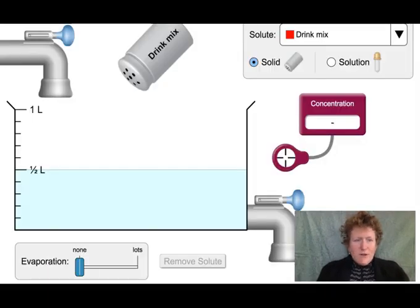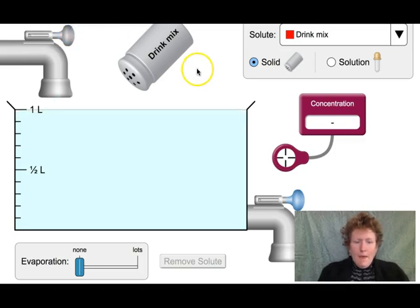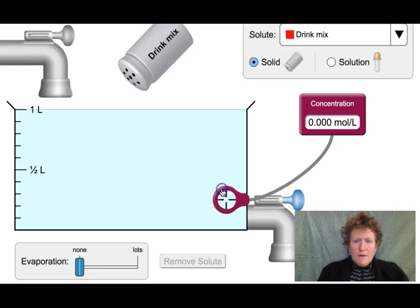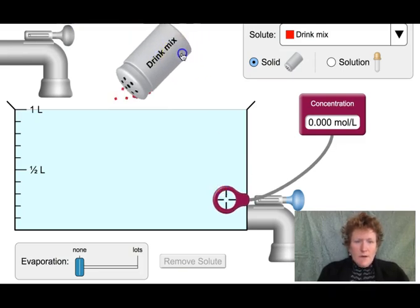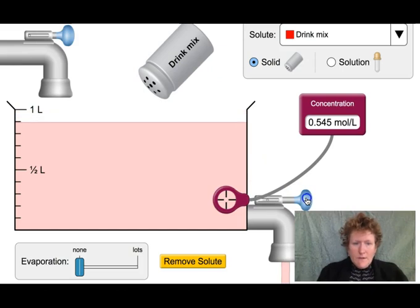So our first instruction is to fill up the tank to one liter. You just pull this little nozzle here and then we're going to bring the concentration meter over and we're going to use the drink mix to get to about half a mole per liter. Oh I got a little bit over, that's okay. Now it asks us to drain the tank and we can use this nozzle here to drain the tank.